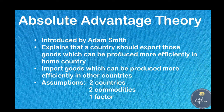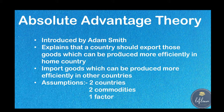There are three main assumptions in absolute advantage theory. The first assumption is that there are two countries. The second assumption is that there are two commodities — one commodity to export and one to import. The third assumption is that there is only one factor of production, which is labor. Let's also understand this with the help of an example.